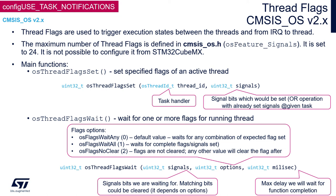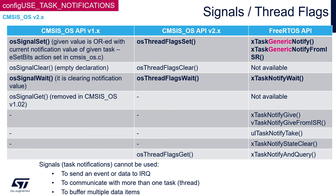Let's have a closer look at the direct-to-task notification API functions. Within CMSIS-OS version 1, this has been called Signals. Within CMSIS-OS version 2, which we are using in this session, it has been renamed to thread flags, as it has a similar structure to event flags. With the original FreeRTOS API, this mechanism is called task notification. The complete FreeRTOS API for this is stored within the task.h file. To use it, we need to define configUSE_TASK_NOTIFICATIONS within the FreeRTOSConfig.h file.